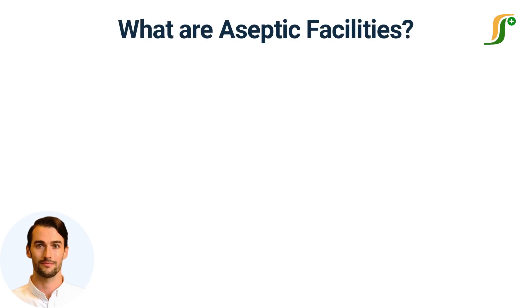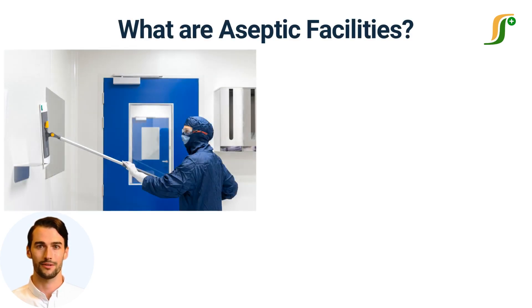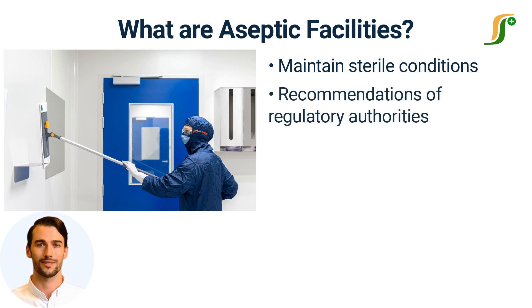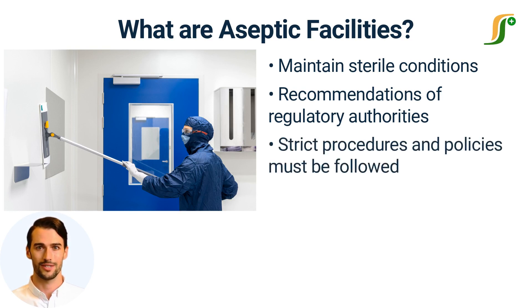First of all, let us have a brief idea about aseptic facilities. Aseptic facilities maintain sterile conditions to prevent contamination in sterile products. Sterile facilities are required to meet the requirements and recommendations of regulatory authorities. The sterile area in manufacturing facilities includes a processing area, storage area, and laboratory. It is critical to maintain sterile conditions. Some strict procedures and policies must be followed strictly in all situations.